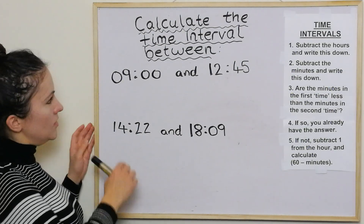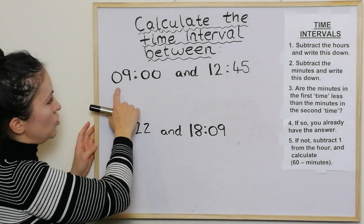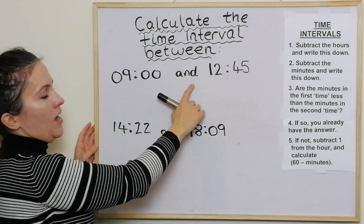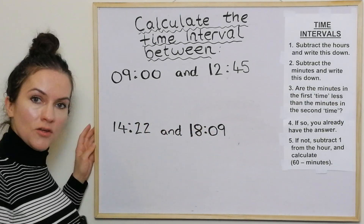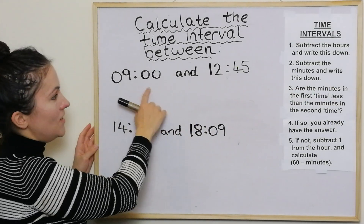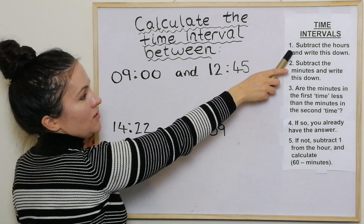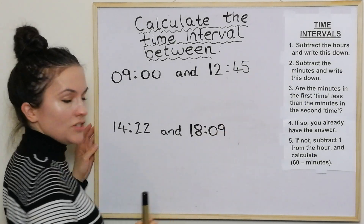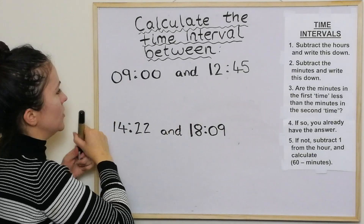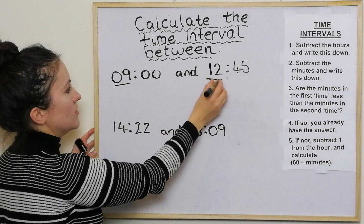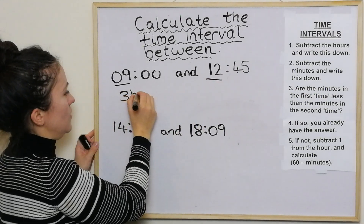We'll start with this example of a school day. Imagine a school day starts at nine o'clock and lunch starts at 12:45. We want to work out the time interval between 9am and 12:45. The first step is to subtract the hours and write this down. That's 9 and 12, so 12 take away 9 is 3 — we have 3 hours.